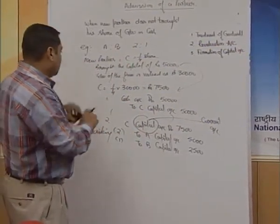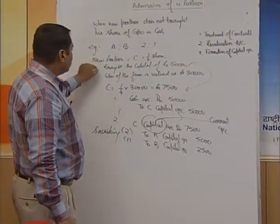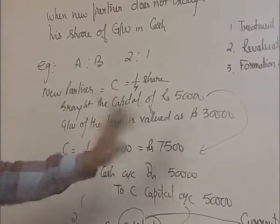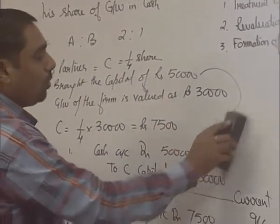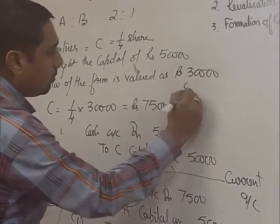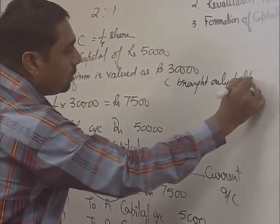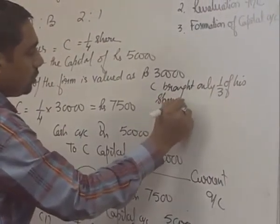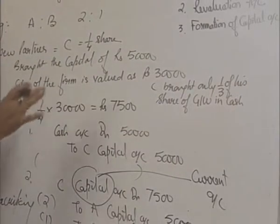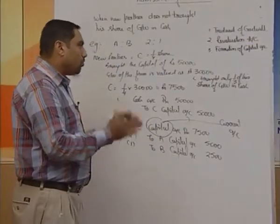I will explain another case. Keeping the same question in mind — A and B are partners in ratio 2:1, new partner C is admitted for one-fourth share, brought capital of 50,000, goodwill of the firm is valued at 30,000 — and I am adding one more line: C brought only one-third of his share of goodwill in cash. So this is another situation where a new partner brings goodwill in cash, but not in full, only in part.